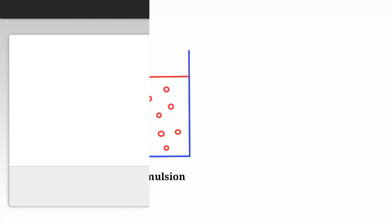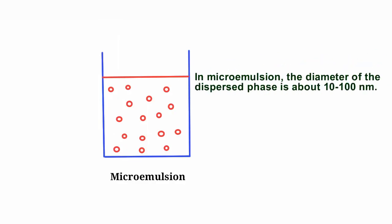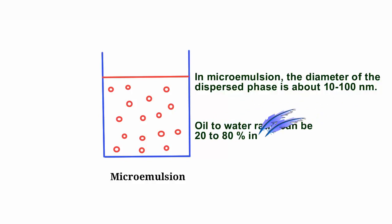In microemulsion, the diameter of the dispersed phase is about 10 to 100 nanometers. The oil-to-water ratio can be 20 to 80 percent in the microemulsion.